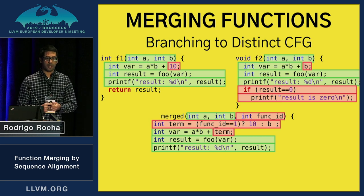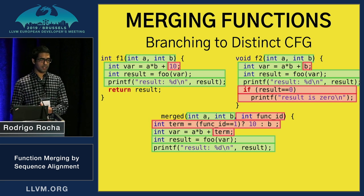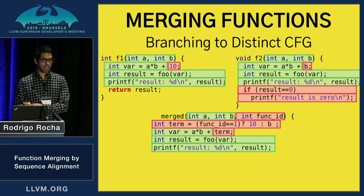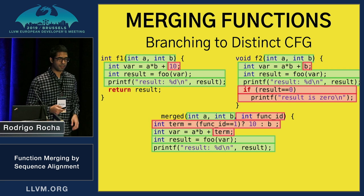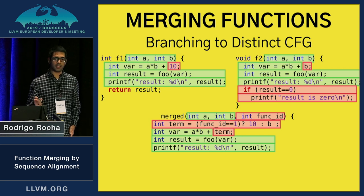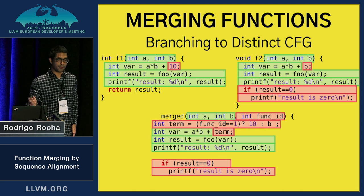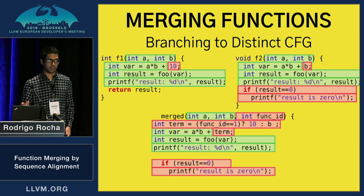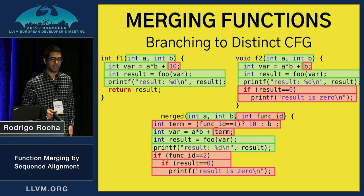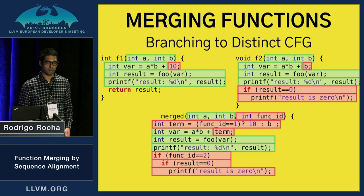Looking at function two now, we can see that we have this branch which creates a difference in the control flow from function two compared to function one. So we can do similar to what we did before: copy this code, but before executing this part of the control flow we need to check which function we are executing, and only execute this part of the code if we are in function two.